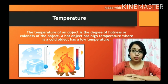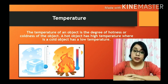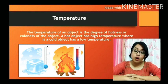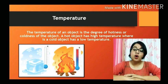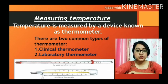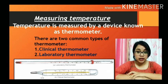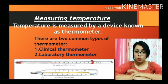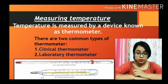Now students, what is temperature? The temperature of an object is the degree of hotness or coldness — that is, how hot or how cold the object is. Temperature is measured by a device known as a thermometer. Broadly, thermometers are divided into two types: one, the laboratory thermometer, and two, the clinical thermometer.